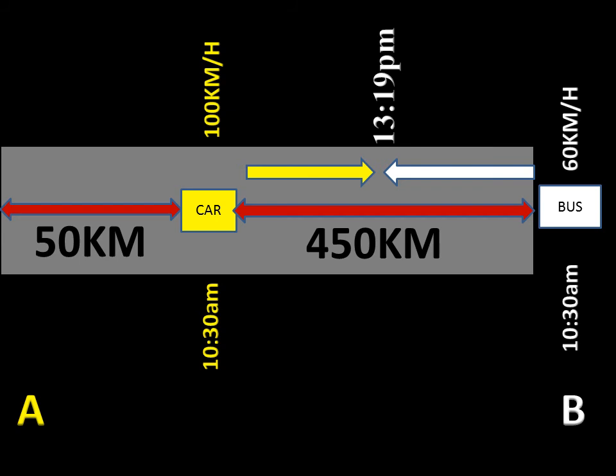On the diagram at the top of the video, between the 100 km/h and 60 km/h labels, we can see 13:19 p.m. — the time when the two vehicles are going to meet. The yellow arrow and the white arrow are shown meeting at that point, confirming they meet at 13:19 p.m., or 1:19 p.m. in the 12-hour system.